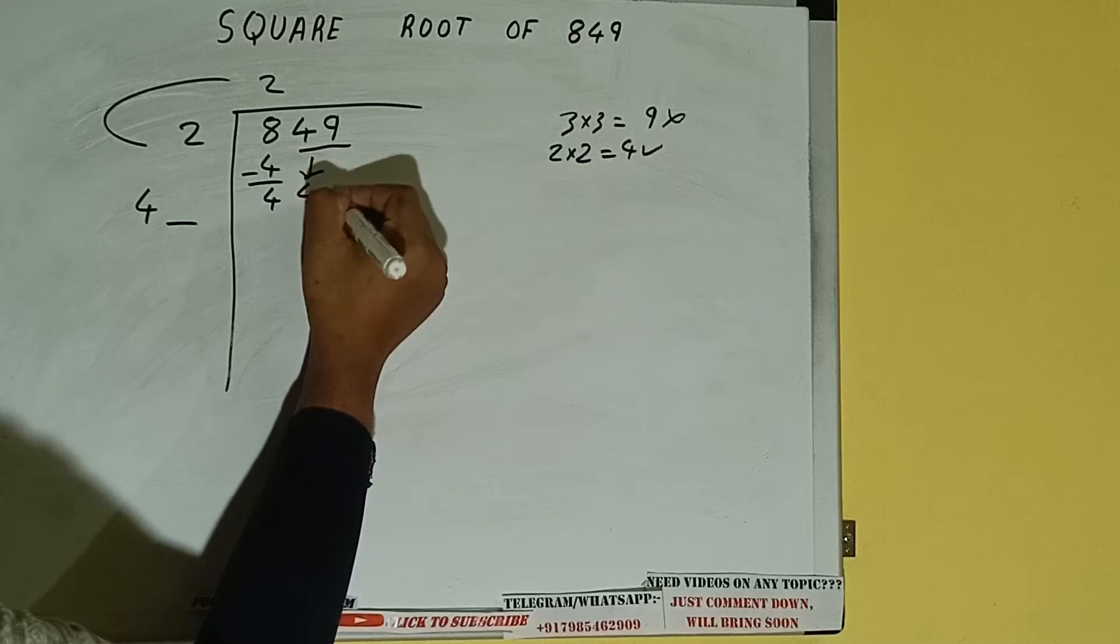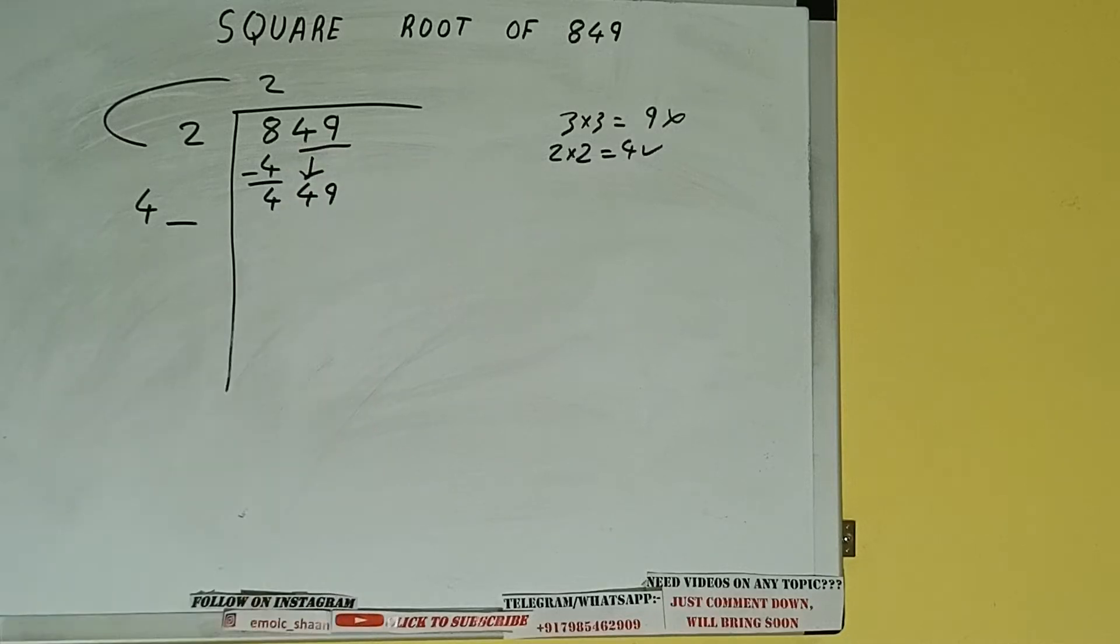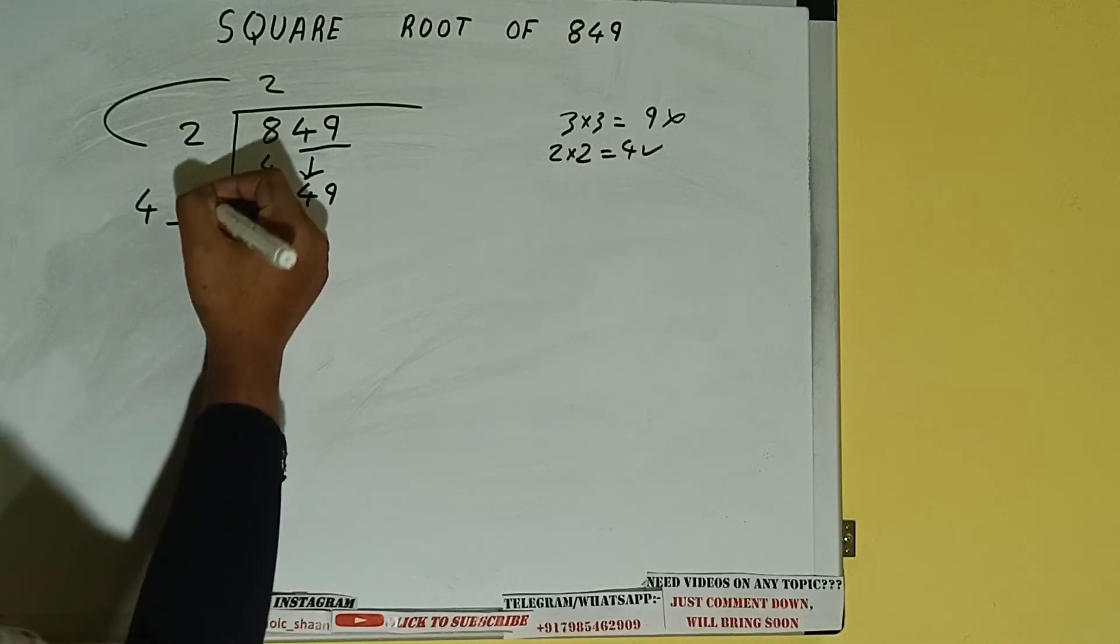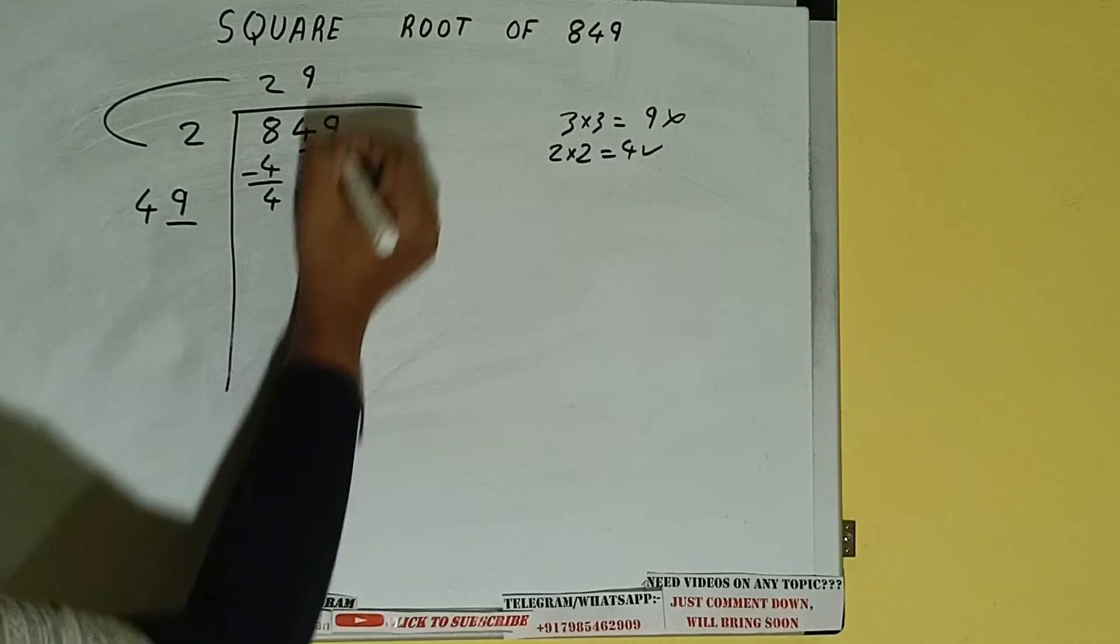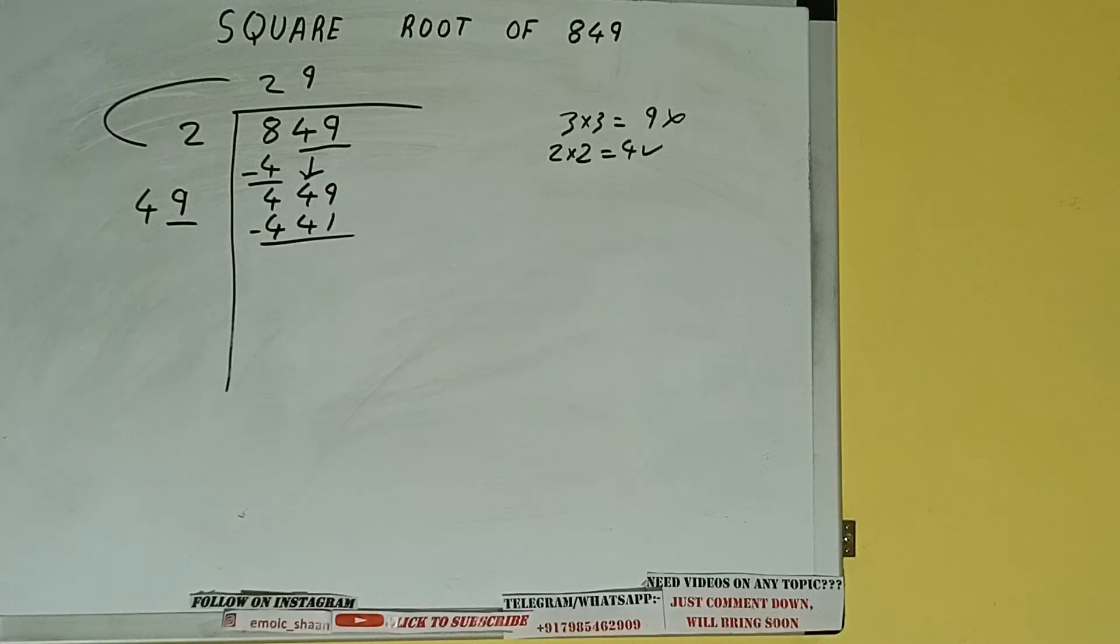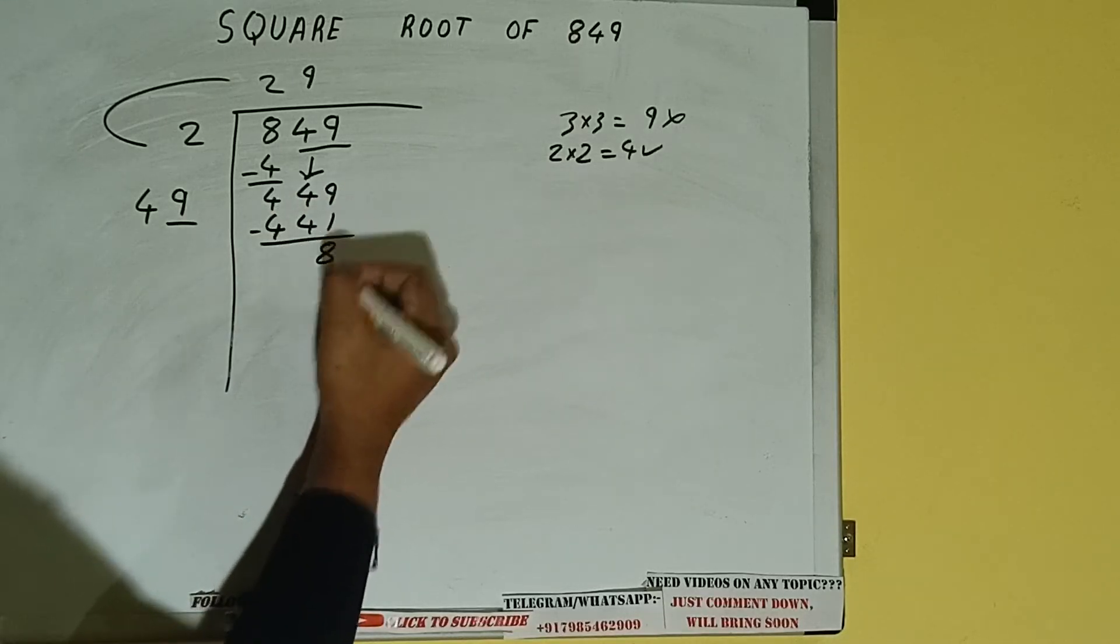Bring the next pair down and it will be 449. Now whatever number we write here, we have to write here also. If we write 9 here and 9 here, it will be 441. Subtract and 8 will be left.